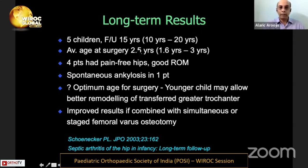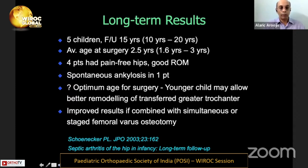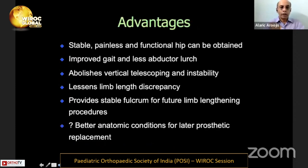Shonecker's patients were mostly younger, around two and a half years of age. Ninety percent had pain-free hips and good range of motion; only one had spontaneous ankylosis. He found the optimum age for surgery may be in the younger population because it allows better remodeling of the greater trochanter. In our series as well, the younger the child, the better the chance of a good result, as more years remain for the trochanter to remodel into the shape of a femoral head.